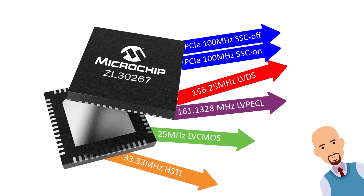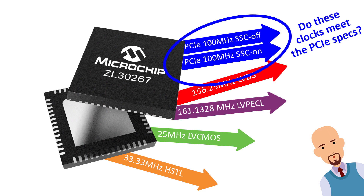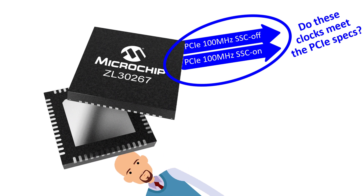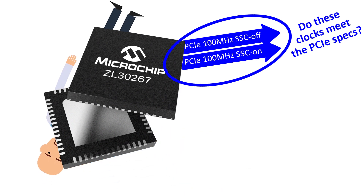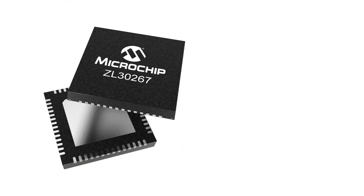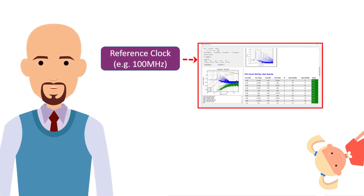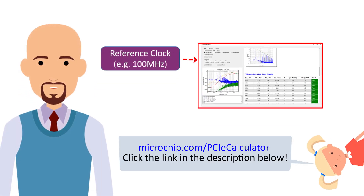How do you know that PCIe clocks are compliant with the relevant PCIe jitter specifications? Well, it is our mission to make your life easier, so we did. Microchip provides an intuitive, easy-to-use tool that you can download for free to determine how well your real-world reference clock meets the PCIe requirements. If you like, download it from the link in the description section below.